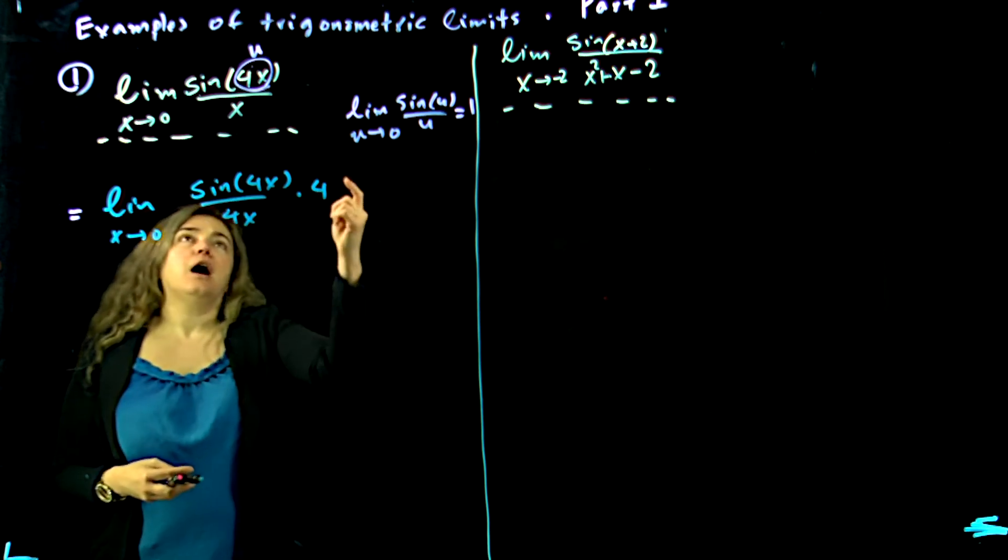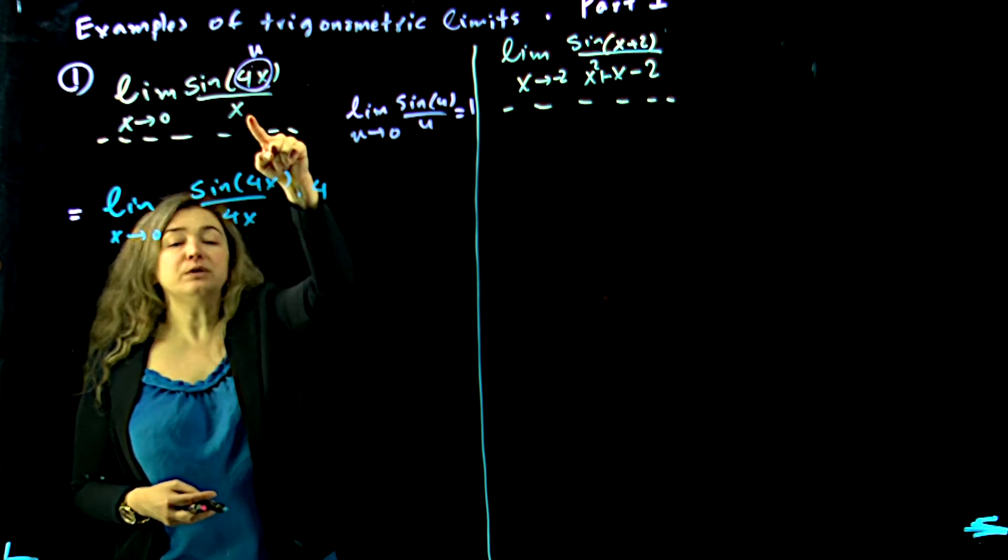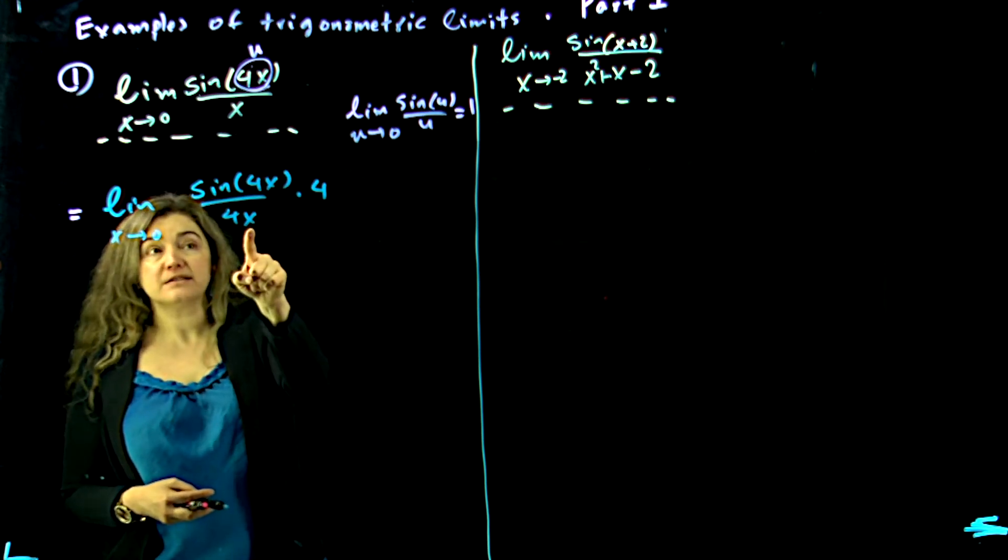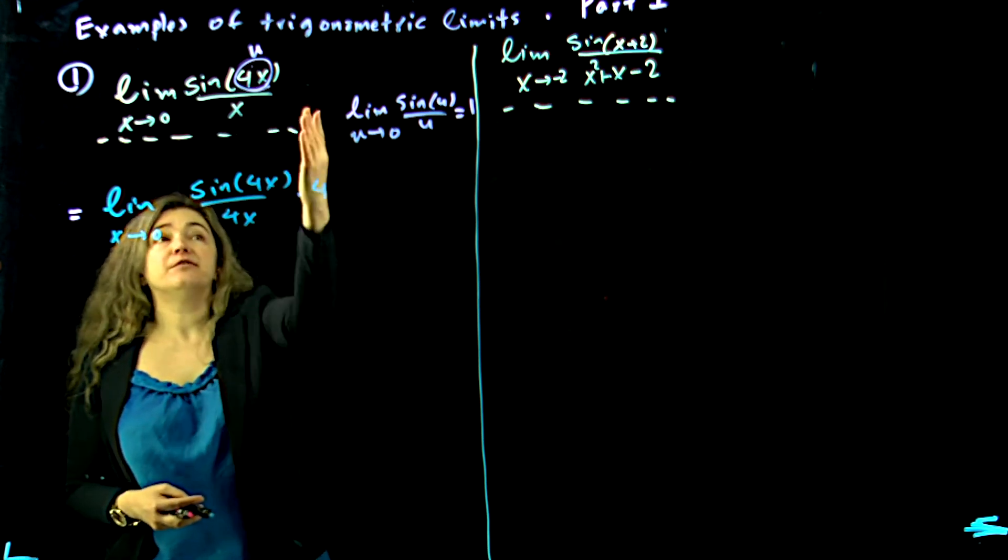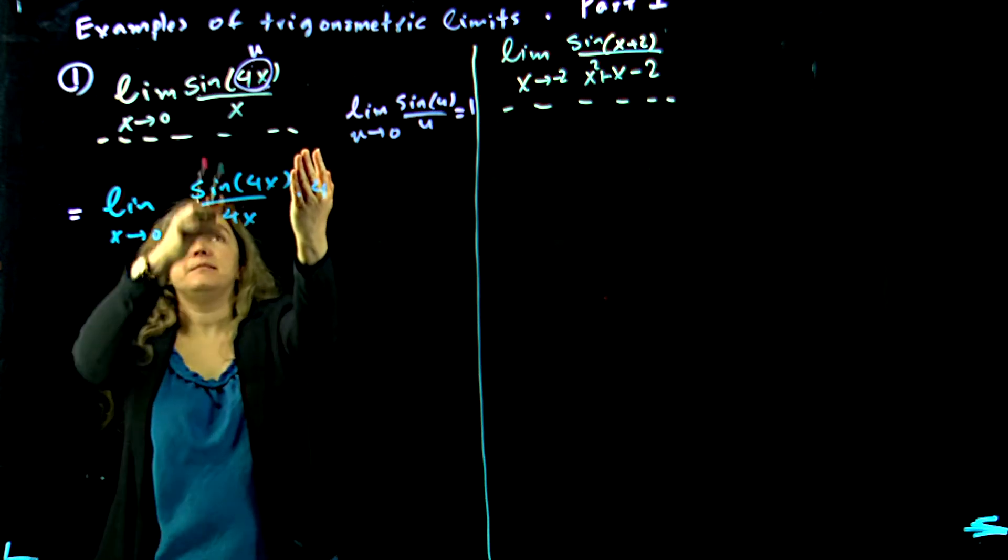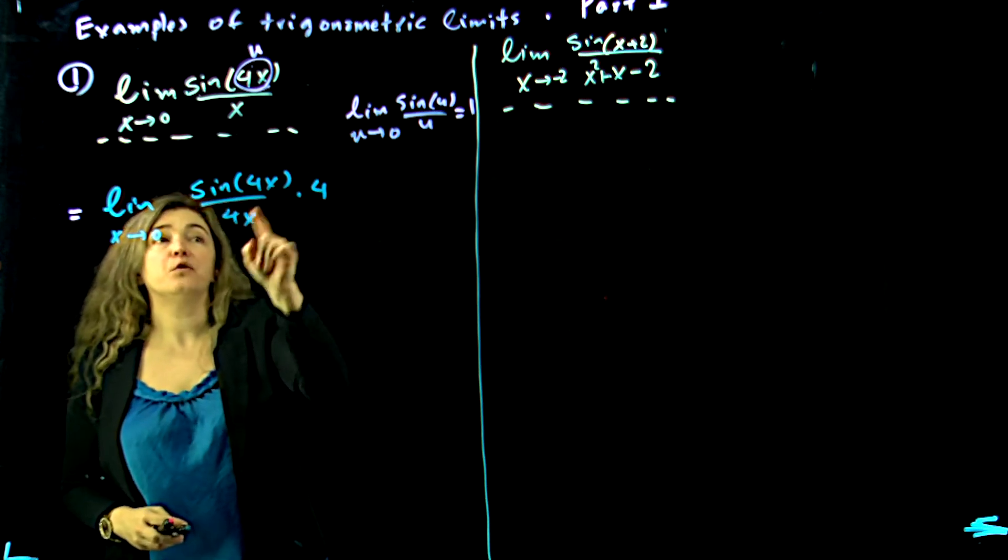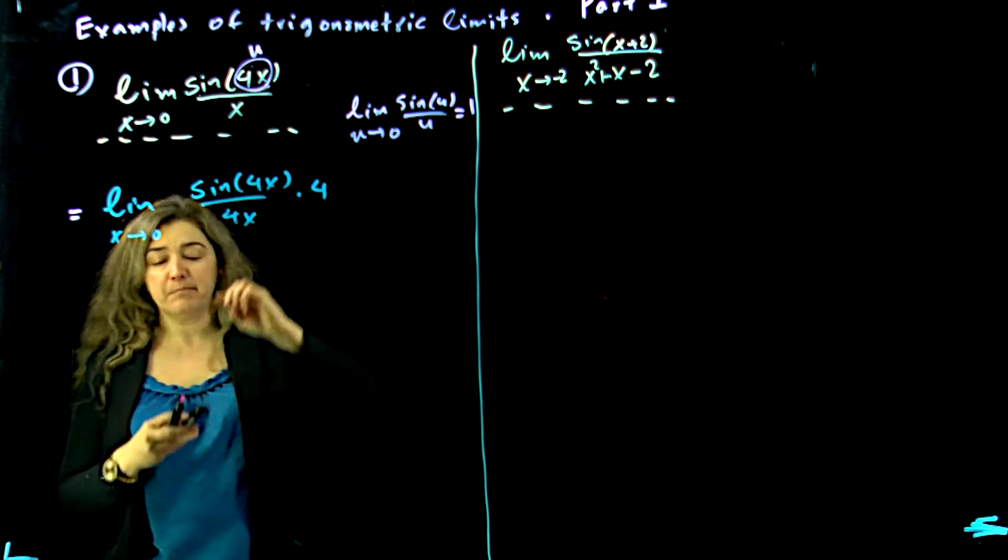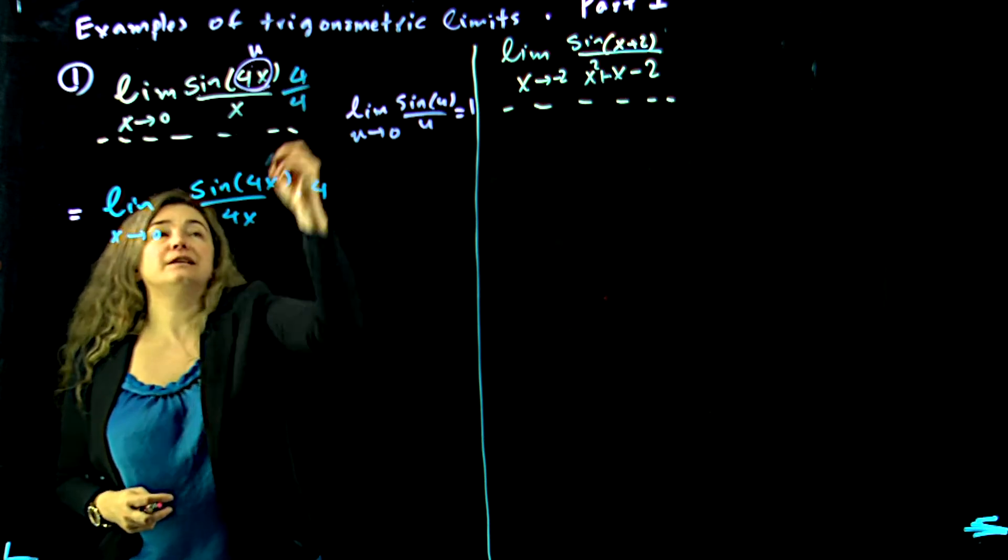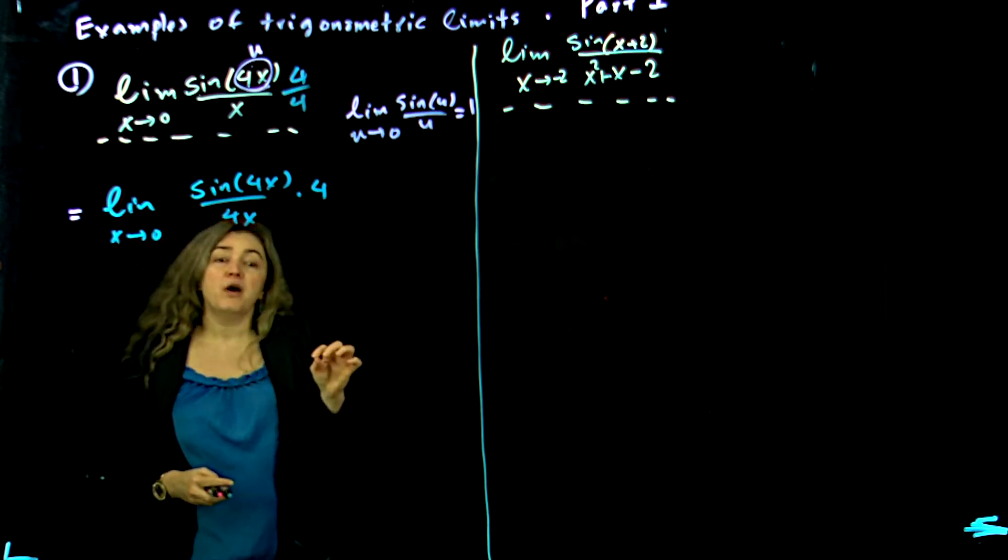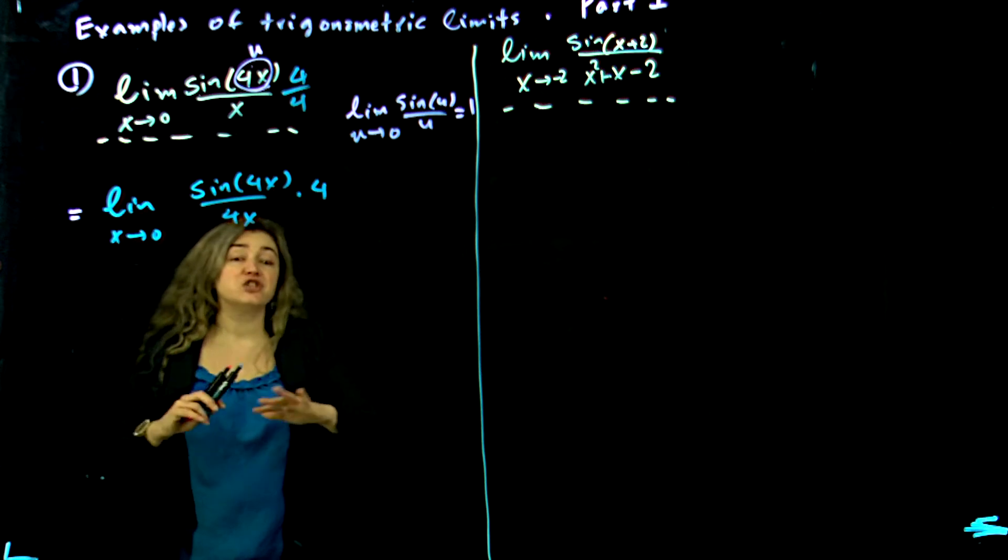So what do I do? I decided that I need to have u in the bottom. That's 4x, but that would be different from here. So I multiply it by 4—basically I multiply top and bottom by 4, divided by 4, so I get what I want in the new denominator without changing anything.